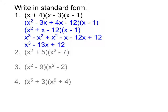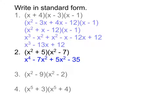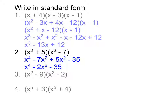That cancellation can happen but doesn't always. Continuing with number two, we multiply everything in the first parentheses by everything in the second, getting x to the fourth minus 7x squared plus 5x squared minus 35. Combining like terms — the x squared terms — gives a final answer of x to the fourth minus 2x squared minus 35.